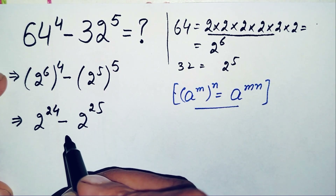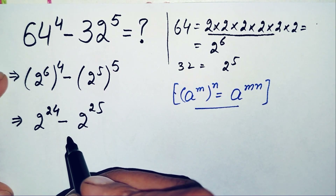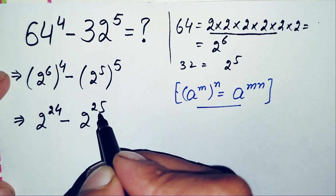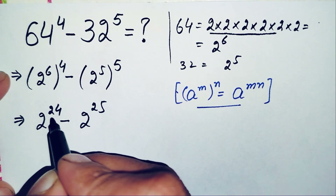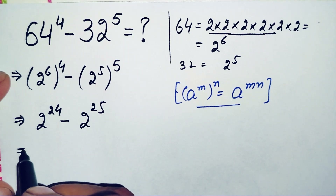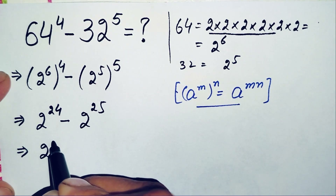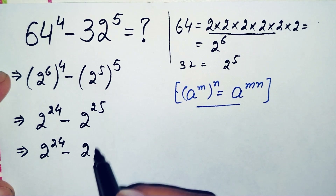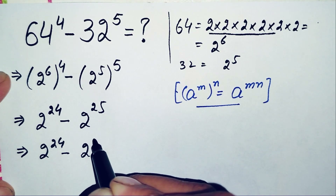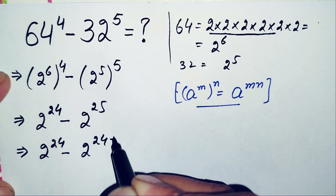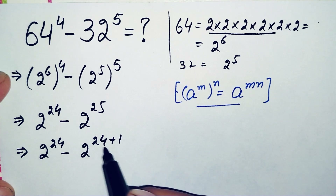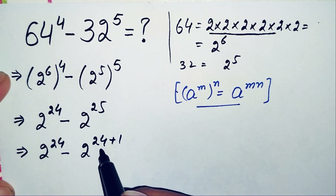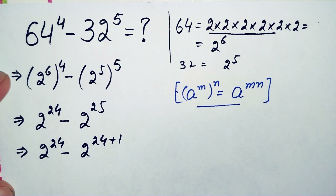Next, we will try to make these two terms have the same base power so we can factor. We rewrite the exponent 25 as the sum of 24 plus 1. So the expression becomes 2 raised to power 24 minus 2 raised to power (24 plus 1). In the second term we will use the exponential property a raised to power m plus n.